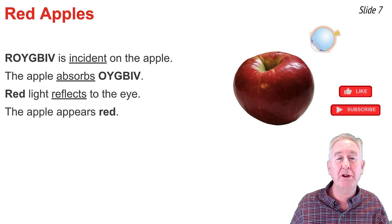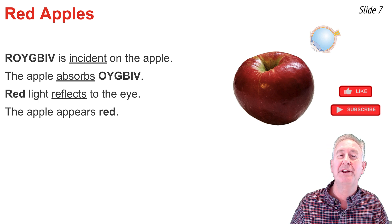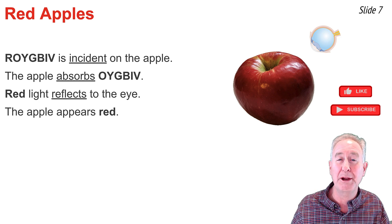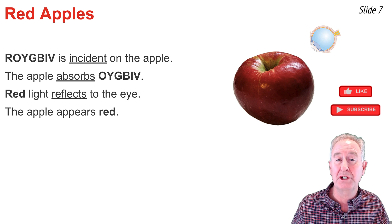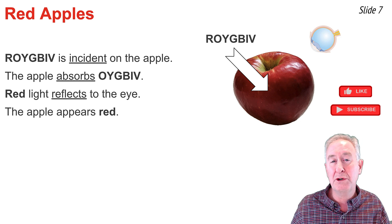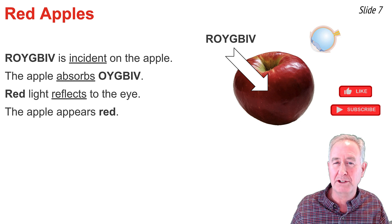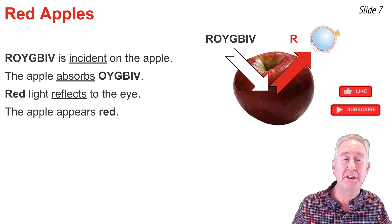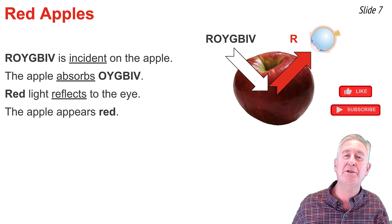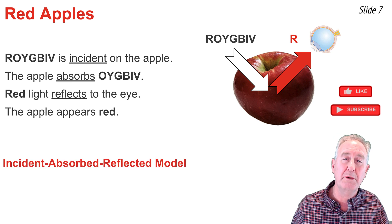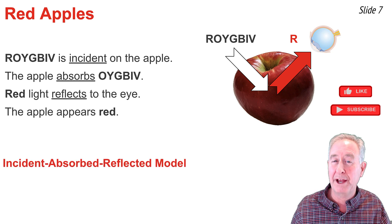In order to predict the color appearance of an object, you need to employ the incident-absorbed-reflected model of light. Let's consider white light shining on a red apple. Since white light consists of ROYGBIV colors, ROYGBIV is shining on the apple. Apples are known to absorb OYGBIV wavelengths of light, so the only color that could reflect to the eye is the red wavelength. Once red wavelengths strike the retina, the red cone responds, sends signals to the brain, and the brain responds psychologically to say: I'm looking at a red apple.